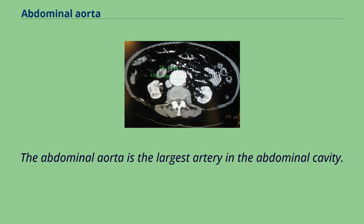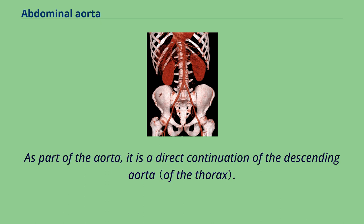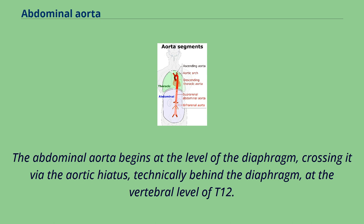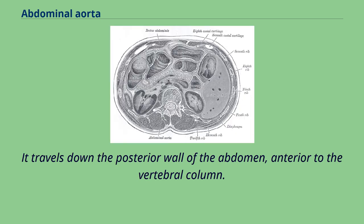The abdominal aorta is the largest artery in the abdominal cavity. As part of the aorta, it is a direct continuation of the descending aorta. The abdominal aorta begins at the level of the diaphragm, crossing it via the aortic hiatus, technically behind the diaphragm, at the vertebral level of T12. It travels down the posterior wall of the abdomen, anterior to the vertebral column.